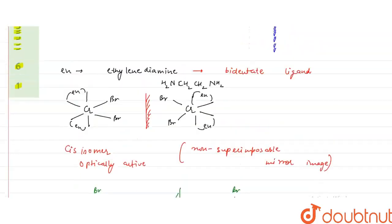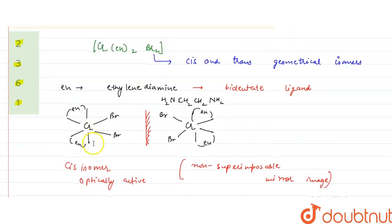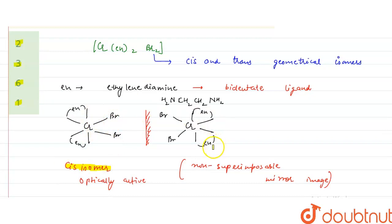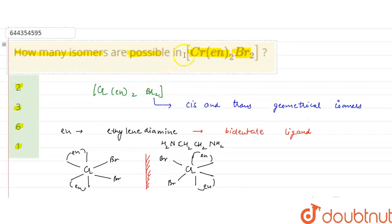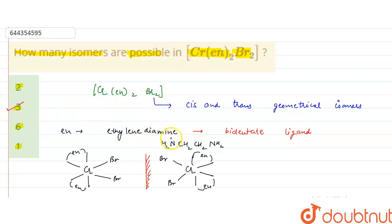It means there are a total of 3 isomers of this compound: the cis isomer, its non-superimposable mirror image, and the trans isomer. So the correct answer is option B — 3 isomers are possible in [Cr(en)₂Br₂]: 2 are for cis and 1 is for trans. I hope you understood. Thank you.